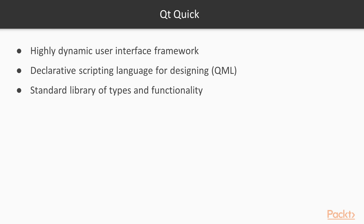When we talk about QML, it is almost certain in a context with Qt Quick. Qt Quick is the standard library of types and functionalities for QML. Its philosophy is to bridge the gap between developers and designers so that they can work on the same sources. The QML language makes sure prototyping user interfaces is rapid and easy.